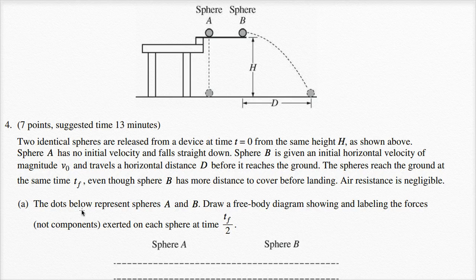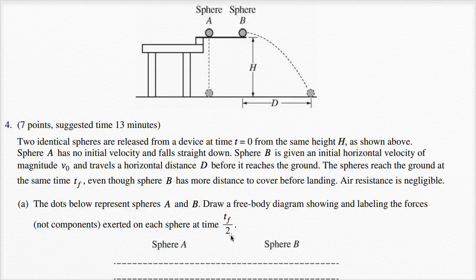The dots below represent Spheres A and B. Draw a free body diagram showing and labeling the forces, not components, exerted on each sphere at time t sub f over two. We can see our spheres here.